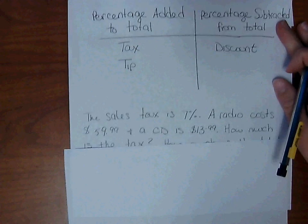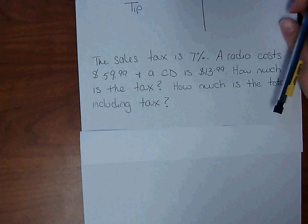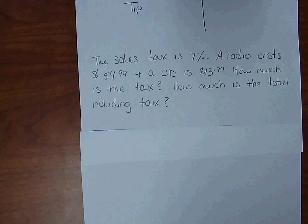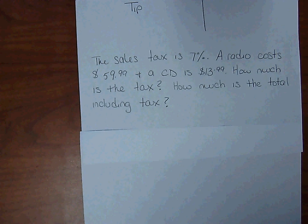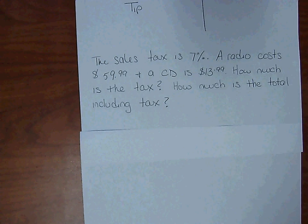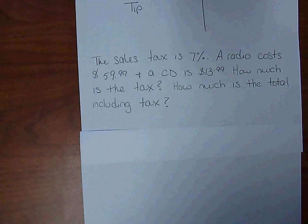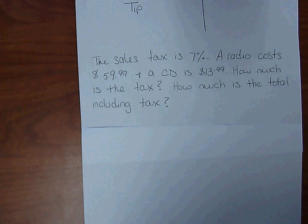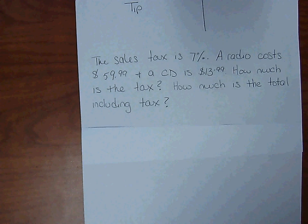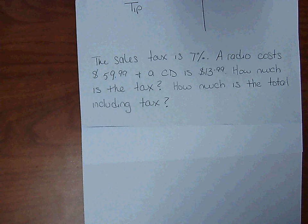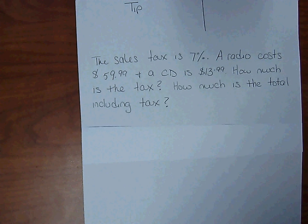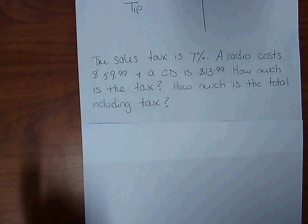So in our question, the sales tax is 7%. A radio costs $59.99 and a CD is $13.99. How much is the tax? And how much is the total including tax? Those are two separate questions, and you have to understand which question is being answered so you give the correct answer, because some questions only ask one of these.